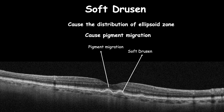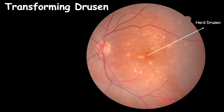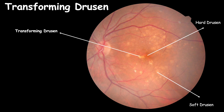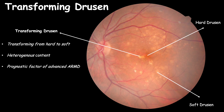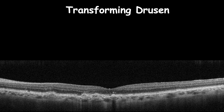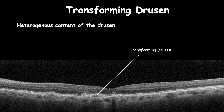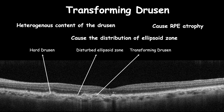Drusen can differ in content — there are homogeneous and heterogeneous drusen. The latter indicates drusen transforming from hard to soft, and it is a prognostic factor for developing advanced AMD. On OCT, homogeneous drusen content is associated with atrophic RPE changes and disturbed ellipsoid zone, which can lead to advanced AMD.